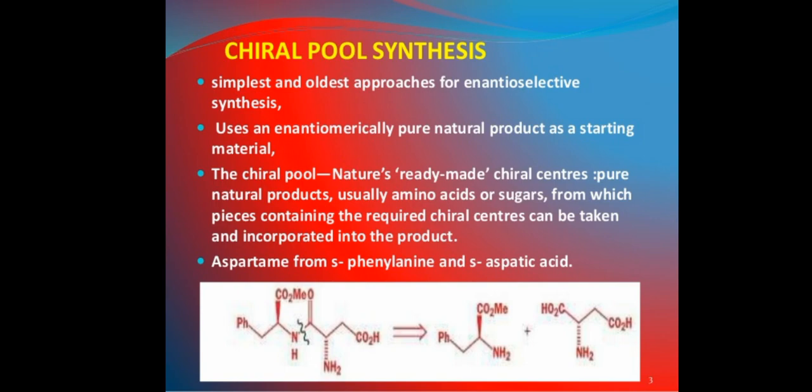The next method is chiral pool synthesis. It is the simplest and oldest approach for enantioselective synthesis. It uses an enantiomerically pure natural product as a starting material. The chiral pool refers to naturally available, readily available chiral centers — pure natural products, usually amino acids or sugars — from which pieces containing the required chiral centers can be taken and incorporated into the product.